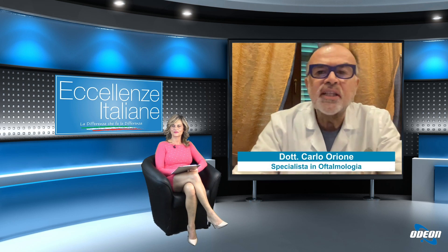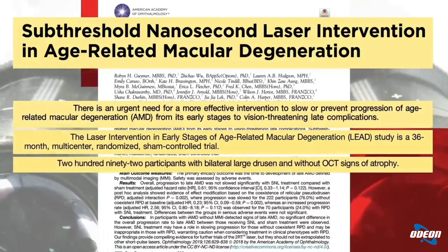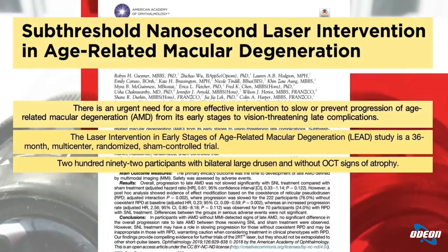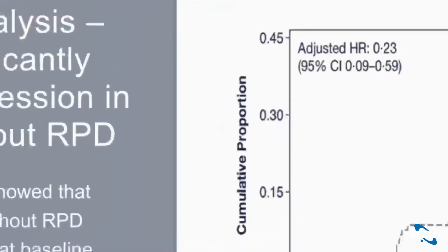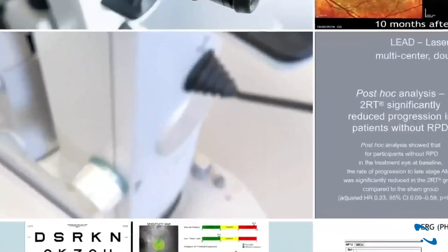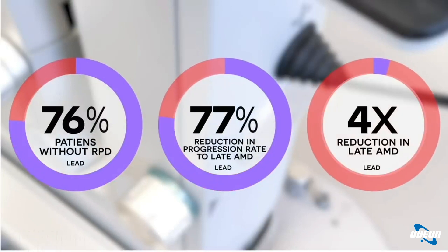È stato condotto uno studio internazionale chiamato LEAD, che ha preso 298 occhi, trattandone la metà con il laser 2RT e l'altra metà con un placebo. Dopo tre anni, nei pazienti trattati con il 2RT si è osservato un rallentamento della progressione della maculopatia di quattro volte rispetto al gruppo di controllo.